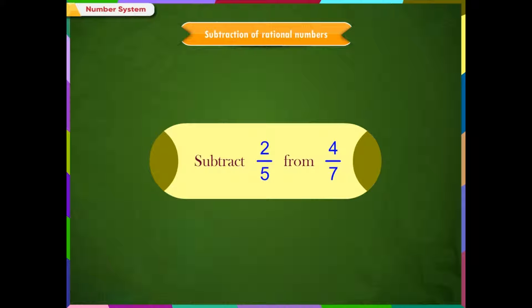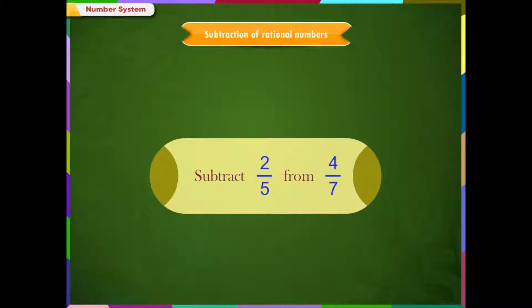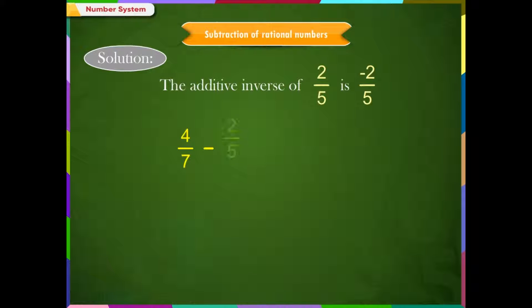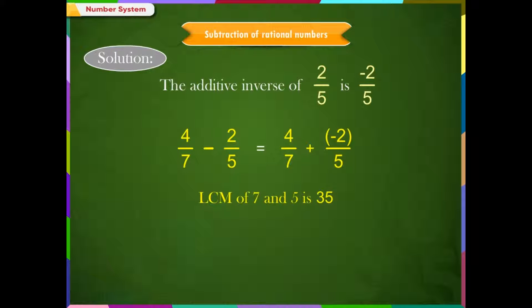Example 1: Subtract 2/5 from 4/7. Solution: The additive inverse of 2/5 is minus 2/5. Therefore, 4/7 minus 2/5 is equal to 4/7 plus (minus 2/5). The LCM of 5 and 7 is 35.